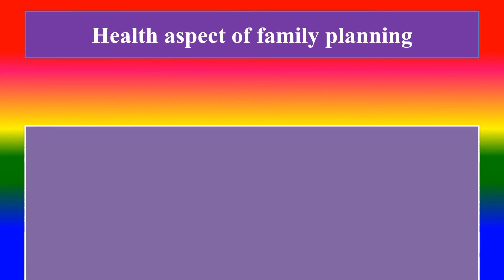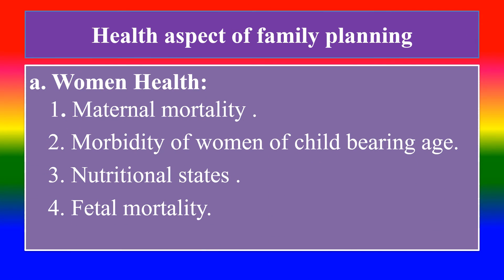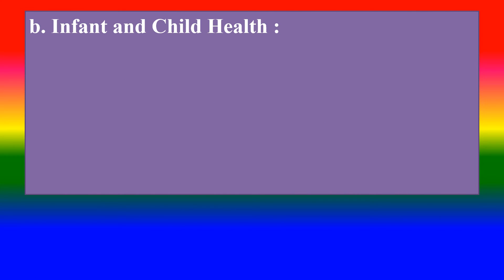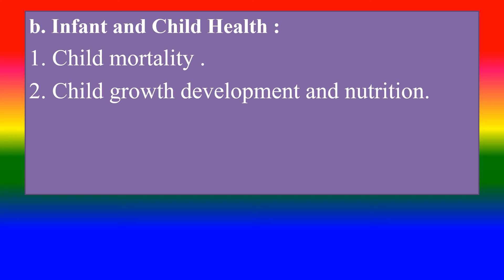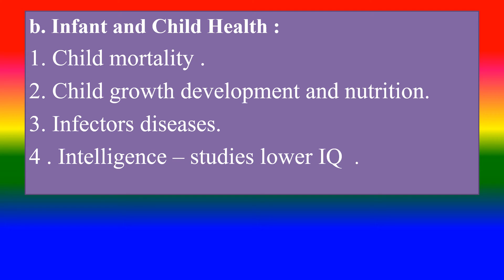The aspects of family planning include: A — women's health, including maternal mortality and morbidity of women of childbearing age; B — nutritional status and fetal mortality; C — infant and child health, child mortality, child growth, development and nutrition; D — infectious diseases; E — intelligence; and F — studies on lower IQ.